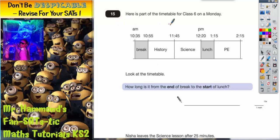Question 15. Here is part of the timetable for Class 6 on a Monday. Look at the timetable. We start at 10:35 AM, the earliest time given, which is the start of break. Then we go to 10:55, the end of break, then 11:45 takes us to the end of history.